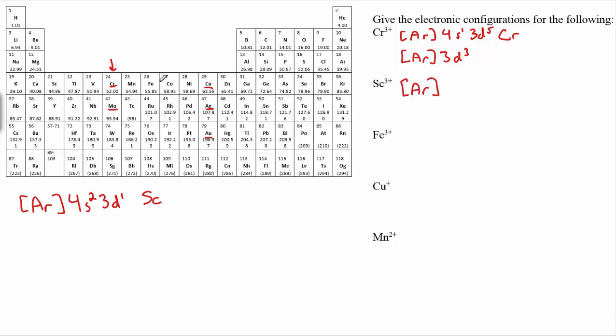Fe3+ on the other hand. So here's iron. Plain old iron - argon is the last noble gas we cross before we get to iron, and then 4s2 and 3d. And if you count them, one, two, three, four, five, six.